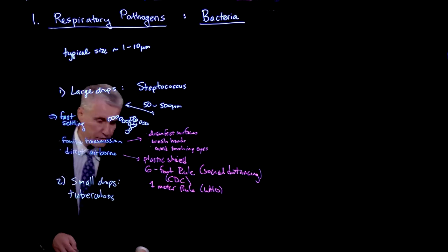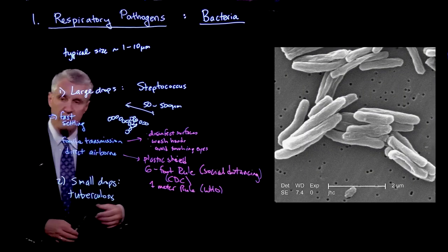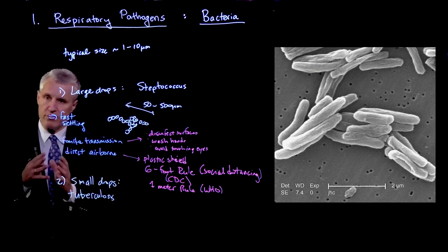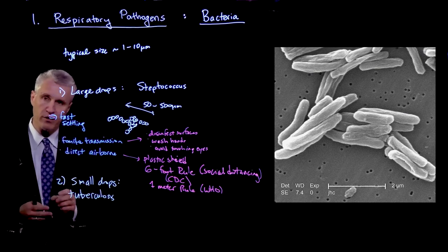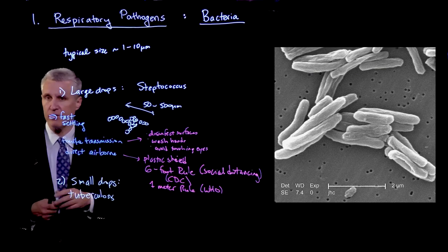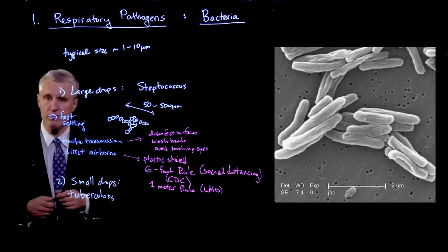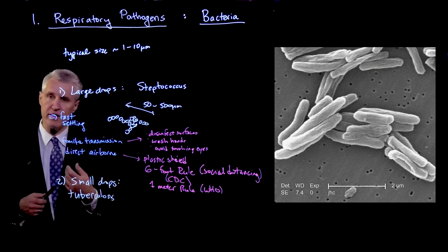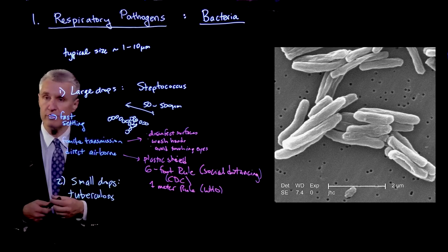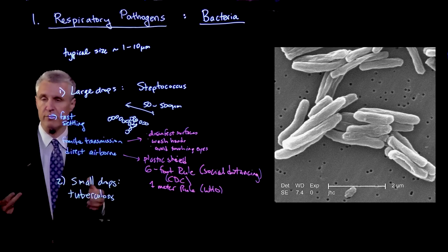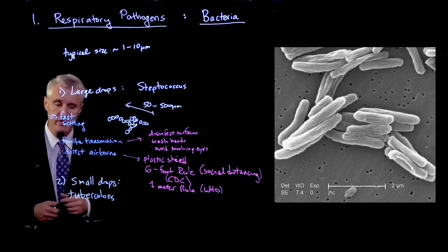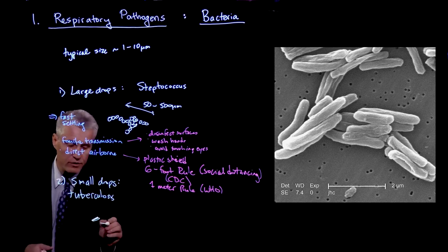Now, tuberculosis, on the other hand, as you can see in the image, is a sort of rod-like bacteria that's quite small. So the length is several microns, typically two to four. But the radius is half a micron, or even down to 0.2 microns. So actually, we're really talking about hundreds of nanometers in length.